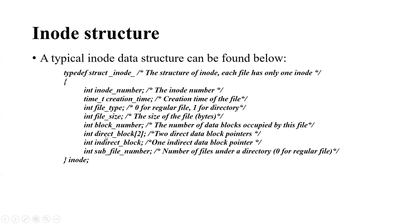We have two direct block pointers and one indirect block pointer. These two are very important because they are the pointers to the data blocks. Whenever we get an inode, the most important pointers we want are the direct block and the indirect block. Finally, the sub-block number is only used for directories — it means how many files are stored in that directory. For regular files it is always zero.